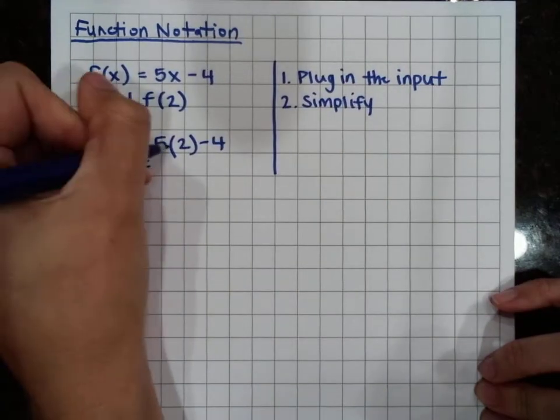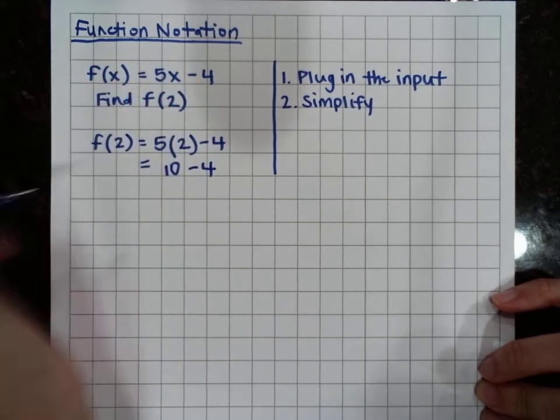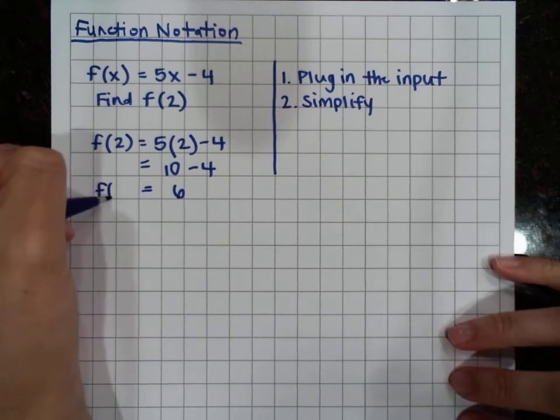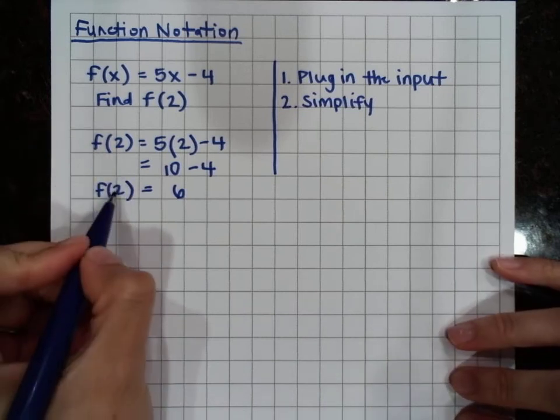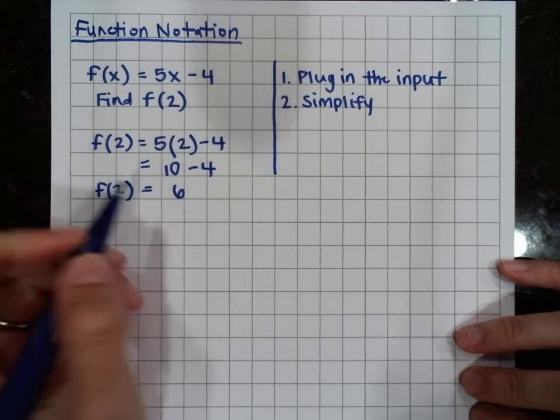So 5 times 2 is 10, and 10 minus 4 is 6. So f of 2, when our input is 2, our output is 6.